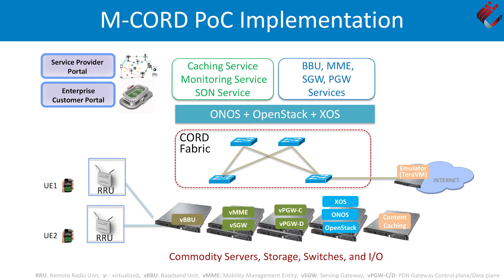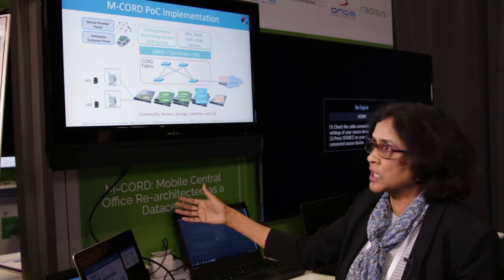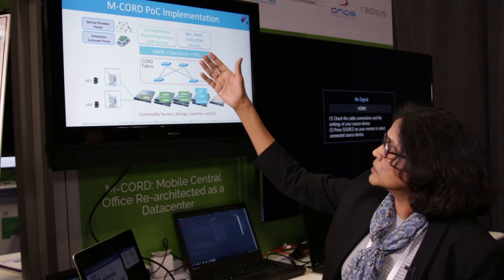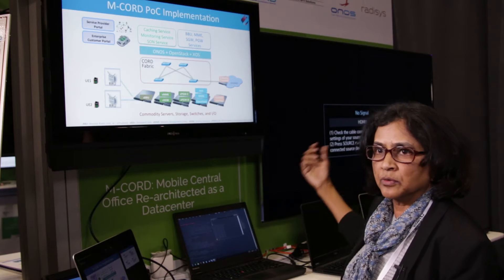Here is what we are showing today — this is the proof of concept implementation. We are showing you how commodity servers, storage, and network are being used. All components such as the baseband unit, the MME, the SGW, and PGW are in virtualized form running on these servers in the rack. We also have a caching service, a monitoring service, and the SON service all running in the same pod. We have two user equipment here for the video caching demo. We will also show you how the service provider portal and the enterprise customer portal work.